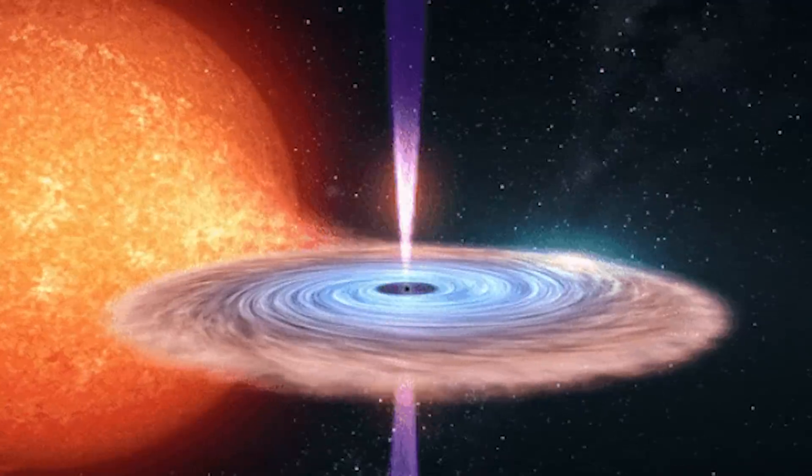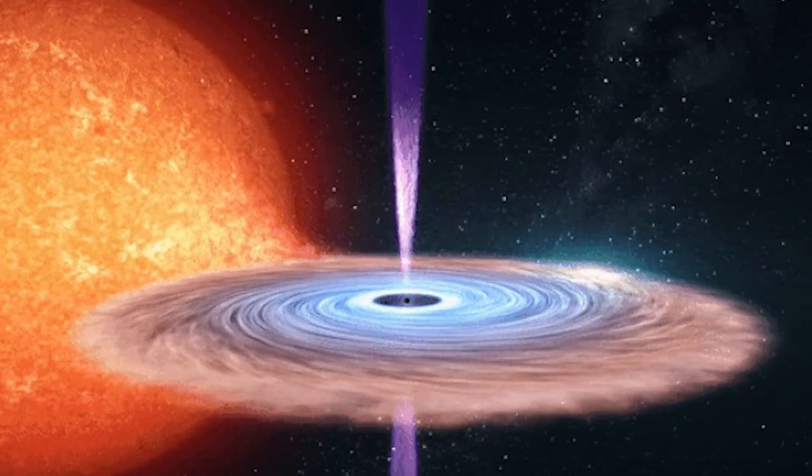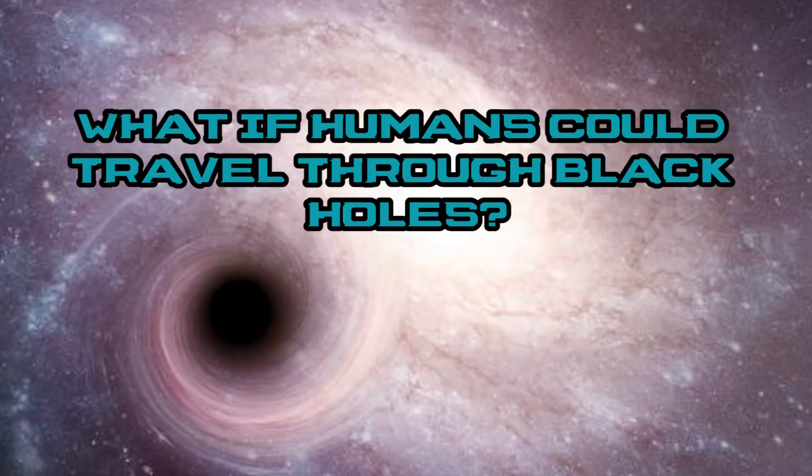A wormhole, also known as an Einstein-Rosen bridge, is essentially a shortcut through spacetime. So let's expand on this idea in today's episode of Life's Biggest Questions and ask: what if humans could travel through black holes?